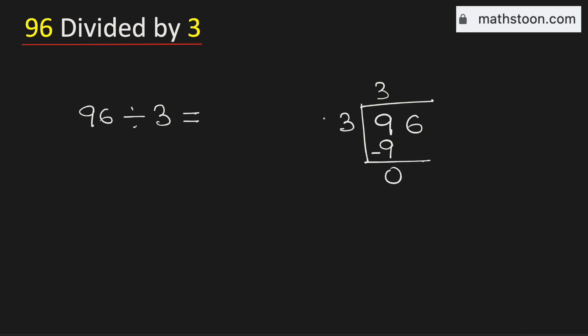As 0 is less than 3, we need to bring down this number 6 here. And we know that there is no meaning of zeros on the left, so we will remove this 0.